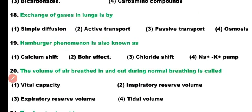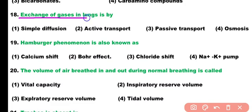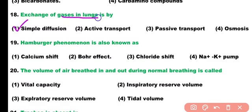Question number 18. Exchange of gases in the lungs is done by: simple diffusion, active transport, passive transport, or osmosis. Correct answer is option 1. Exchange of gases in the alveoli of the lungs takes place by simple diffusion mechanism.